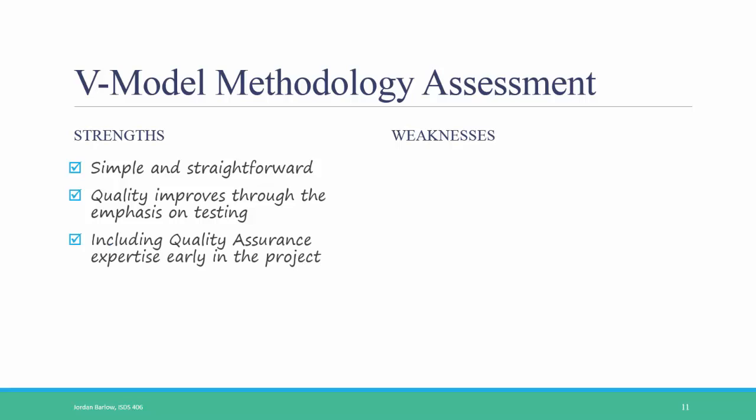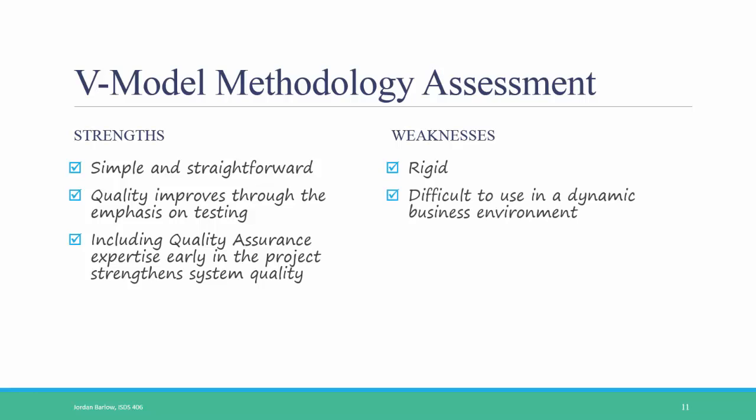It also includes quality assurance expertise early in the project to ensure that you have a high quality system. The weaknesses of the V-model, like the traditional waterfall method, are that it's rigid and it's difficult to use in a dynamic business environment when things are going to be changing or you might have new requirements coming up. So to summarize, the three waterfall type methods are the traditional waterfall, parallel, and the V-model.